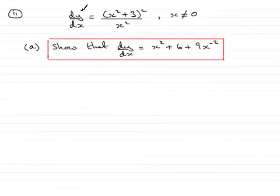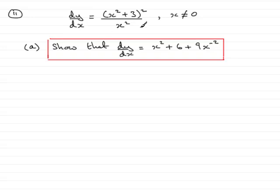In question 11, we're given that dy/dx, which is the gradient of any point on a curve C, is given by (x² + 3)² over x². And x can't be equal to 0 — you cannot divide any value by 0 because you'll get an undefined value. In part A, we're asked to show that dy/dx is equal to x² + 6 + 9x⁻².